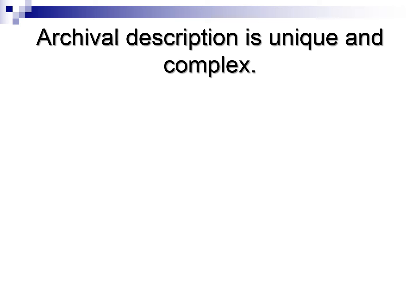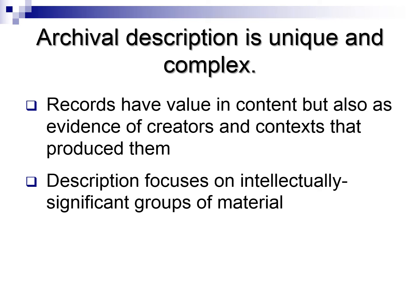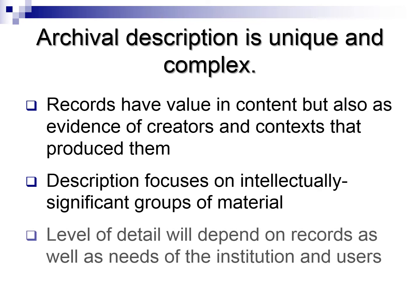The first principle of DACS states that records in archives possess unique characteristics, and as a result, archival description has unique qualities as well. It differs from the description of other cultural heritage resources, like bibliographic entities or museum objects. Archival records serve as a trace of a historical process. They are valuable not just because of their content, but because they help give evidence of the creators and contexts that produce them. Archival description focuses on intellectually significant groups of material rather than individual items. It also describes how these groupings relate to one another within a single source of provenance or collection. The level of detail with which each group of materials is described depends on the records themselves as well as the needs of the institution and its users.